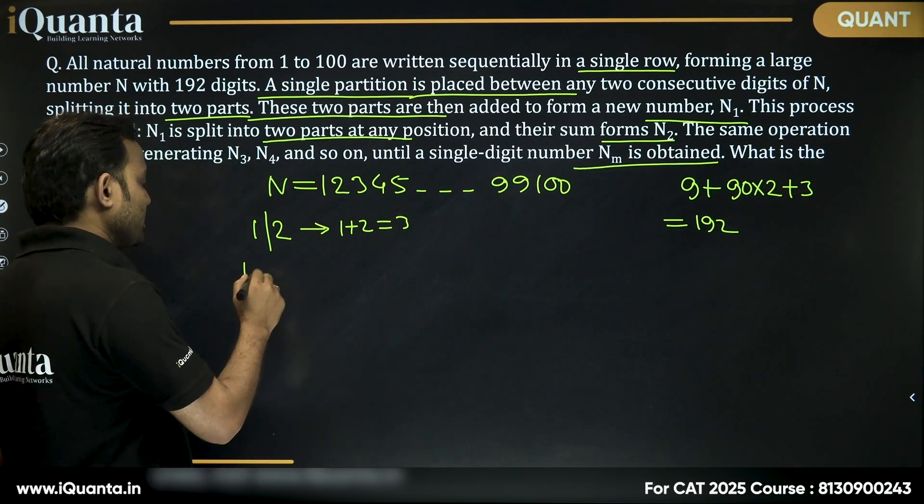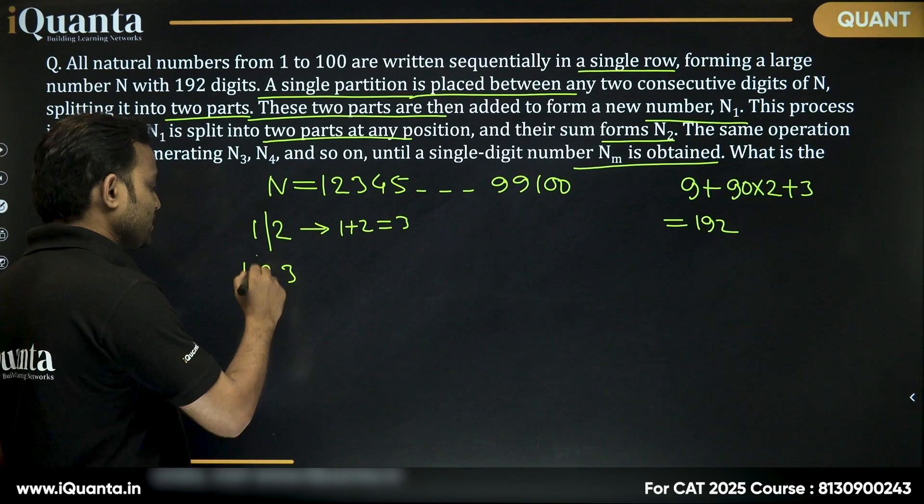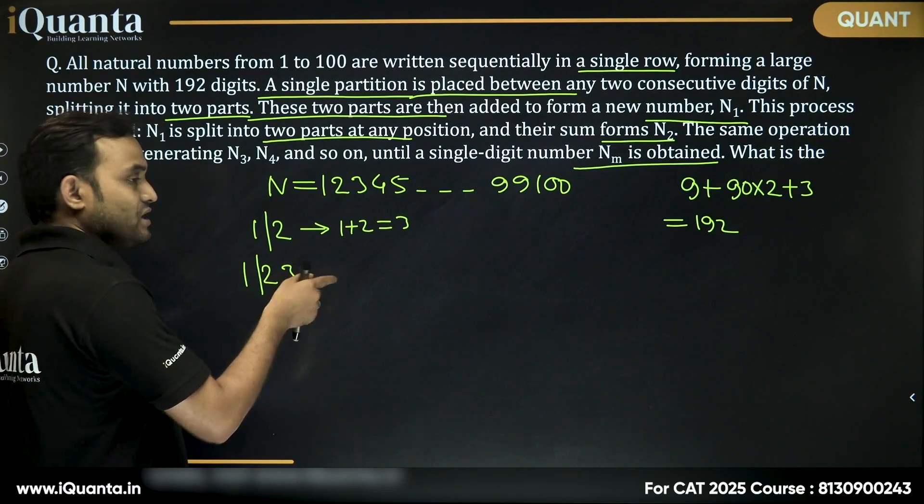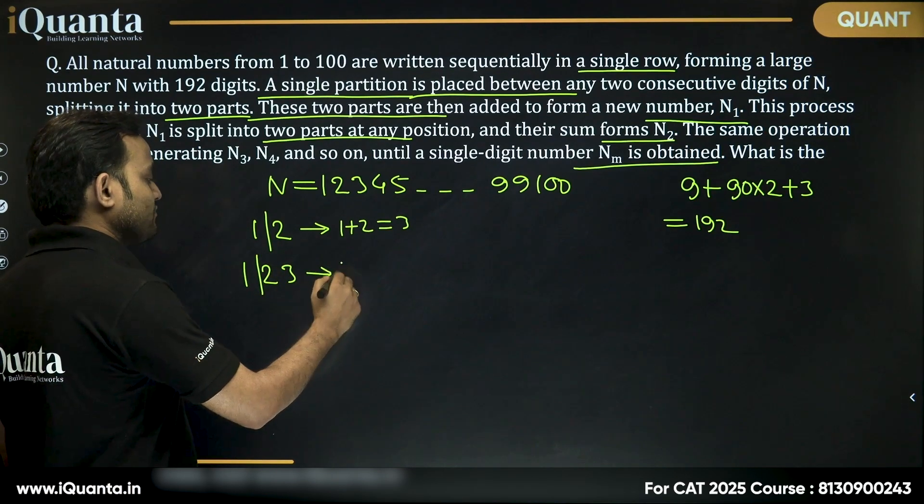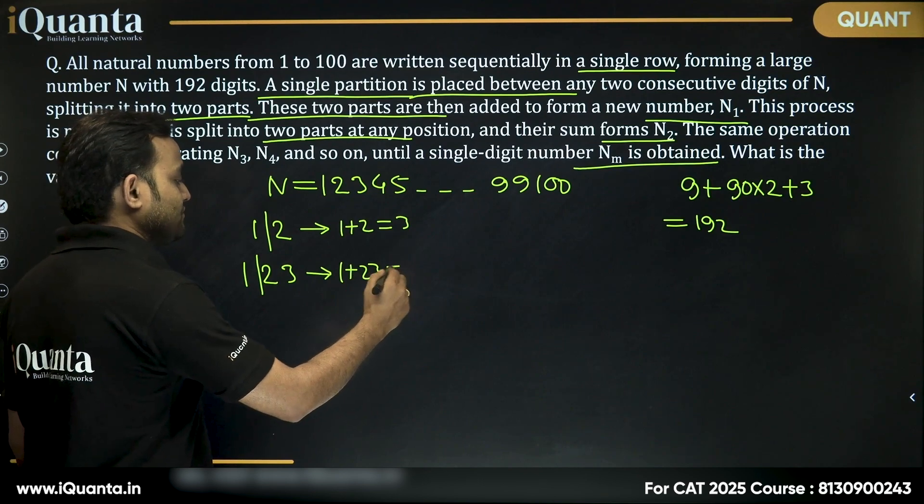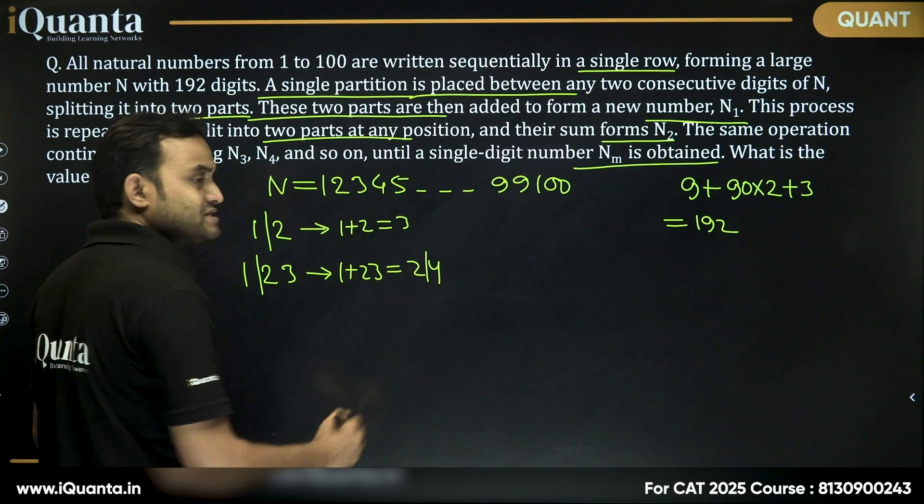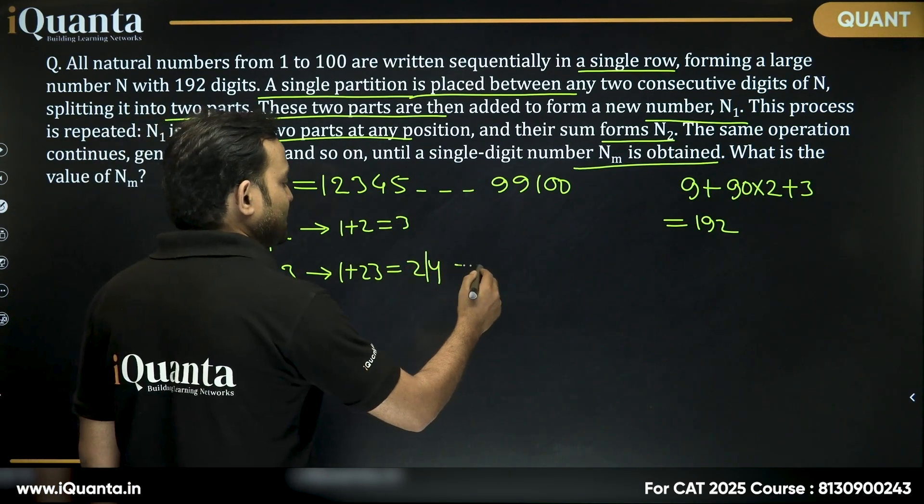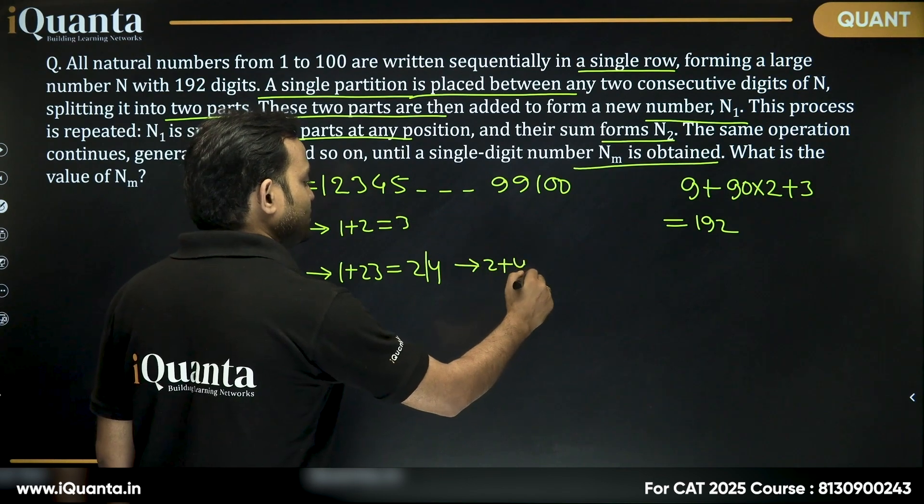Then if I'm putting a partition in three digit number, this will be 1 and 23. Sum will be 1 plus 23, which is equal to 24. Now, let's again put a partition. Then this will be 2 plus 4, which is equal to 6.